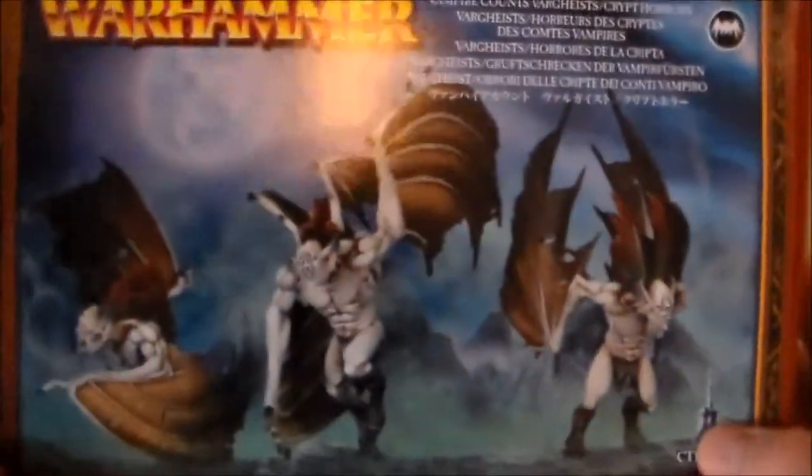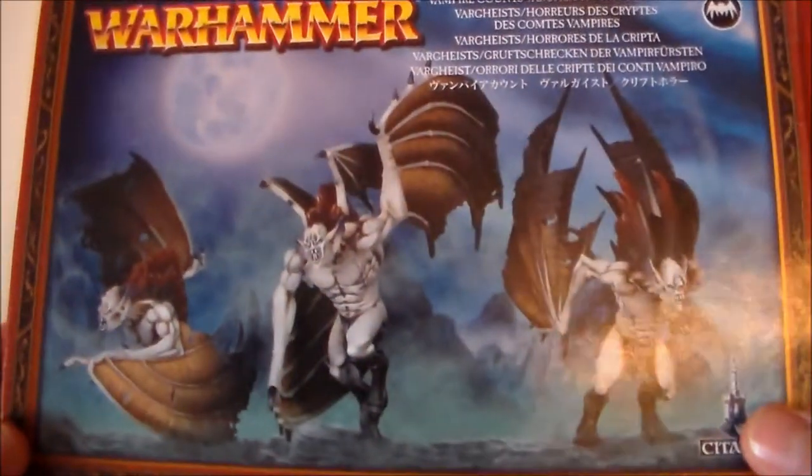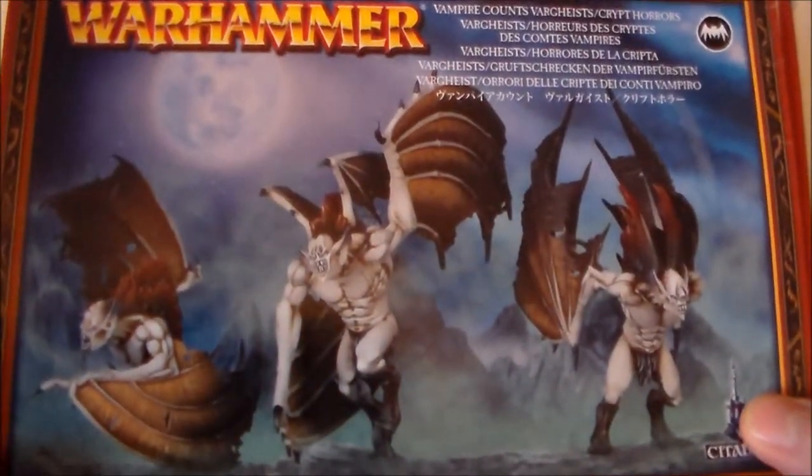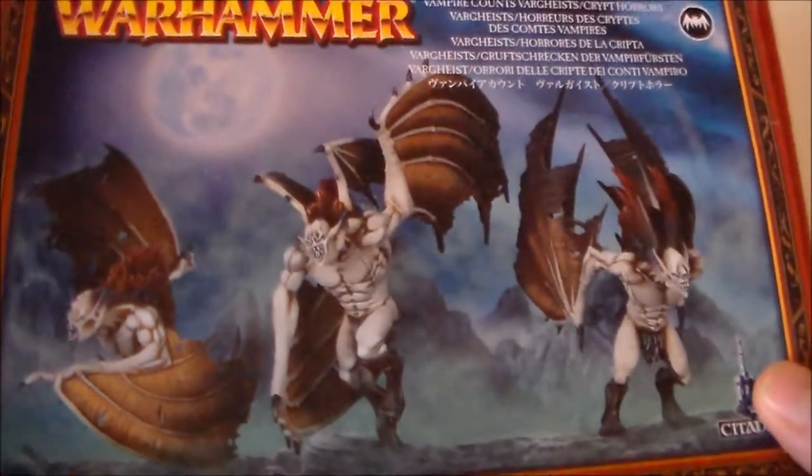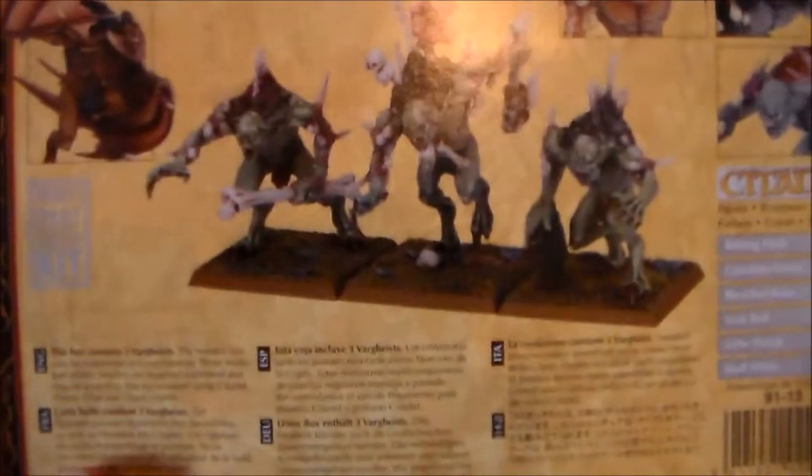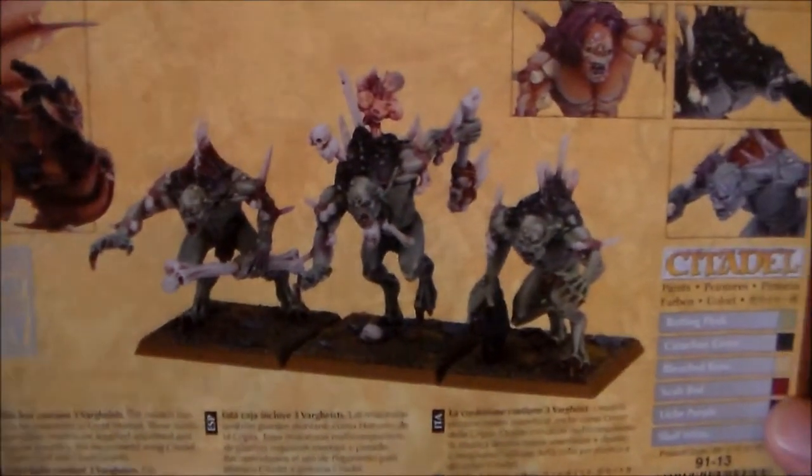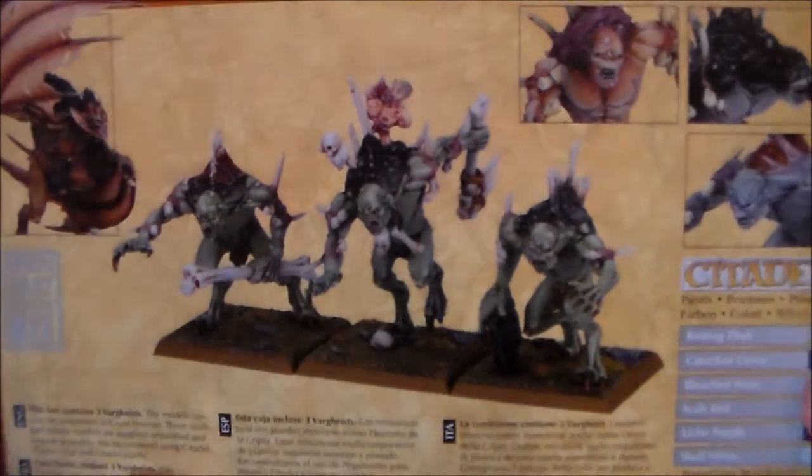This is a dual kit. As you see on the cover you see the Vargheists, they're kind of the flying guys, paler looking skin. And then the back you get the Crypt Horrors which are like the big muscly version.